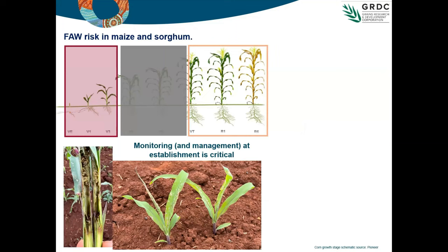When it comes to rules of thumb for maize and sorghum, we only have three years' experience with fall armyworm compared to the 30-50 years of experience behind rules of thumb for helicoverpa and native armyworms. I offer these with some trepidation because we don't know if we'll see higher fall armyworm levels in the future. But management recommendations are important. Monitoring and management at establishment is absolutely critical — crops can disappear in days if there are fourth, fifth, or sixth instar larvae present, potentially within 10-14 days of crop emergence under warm conditions.